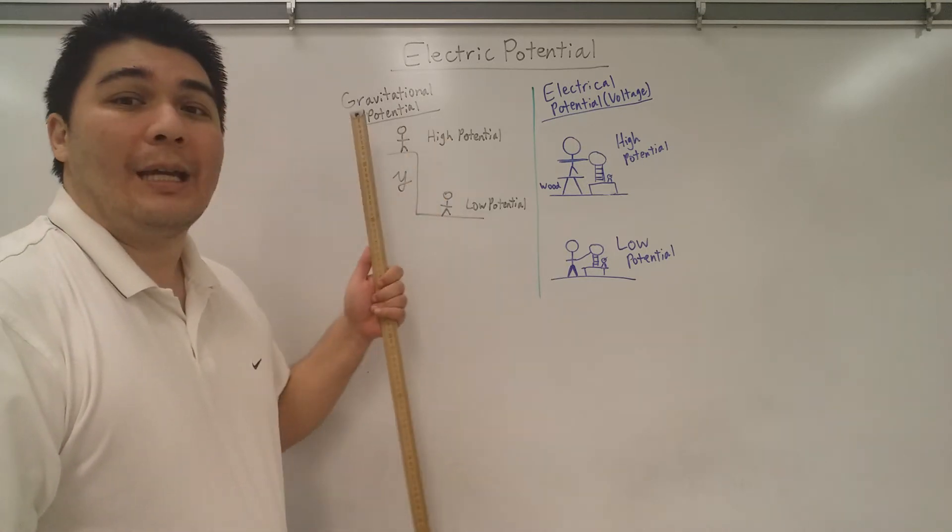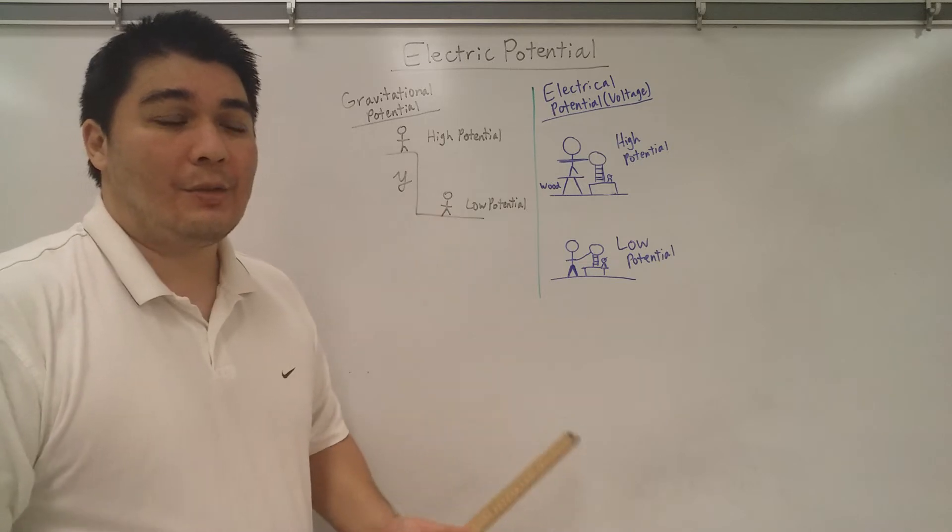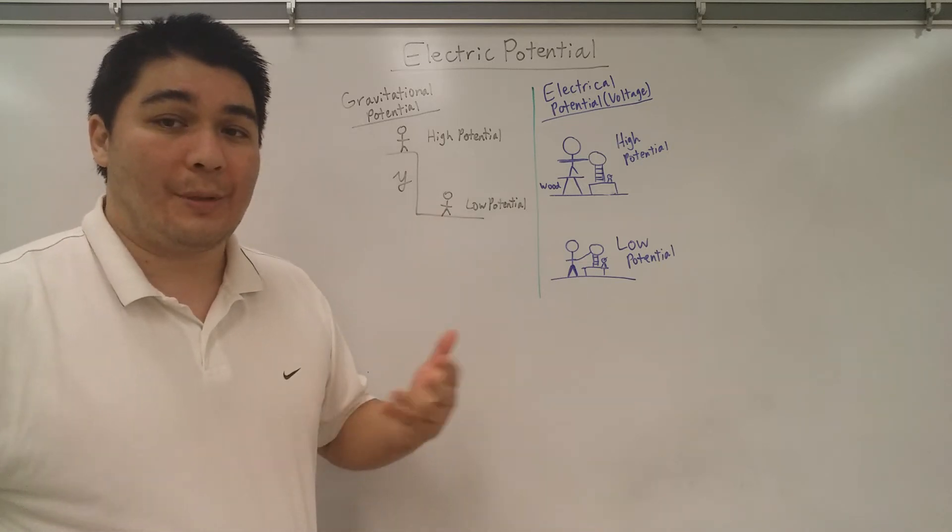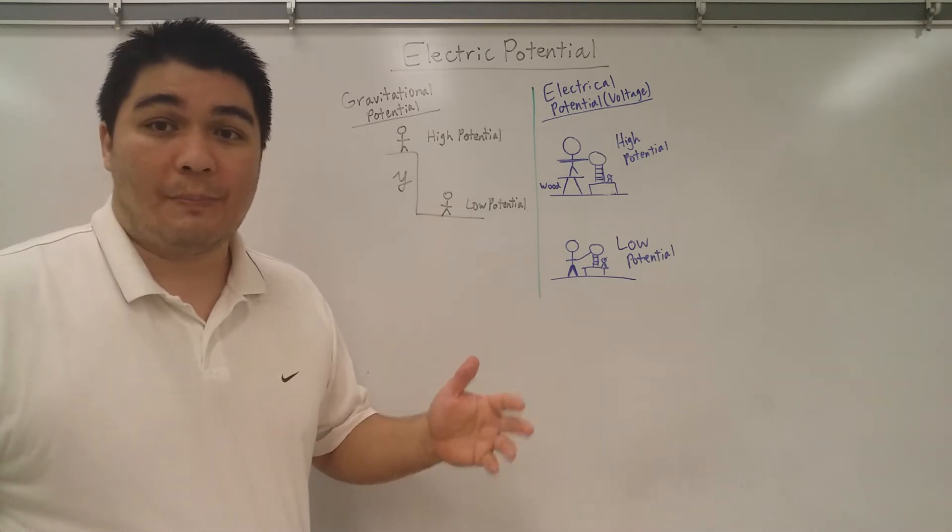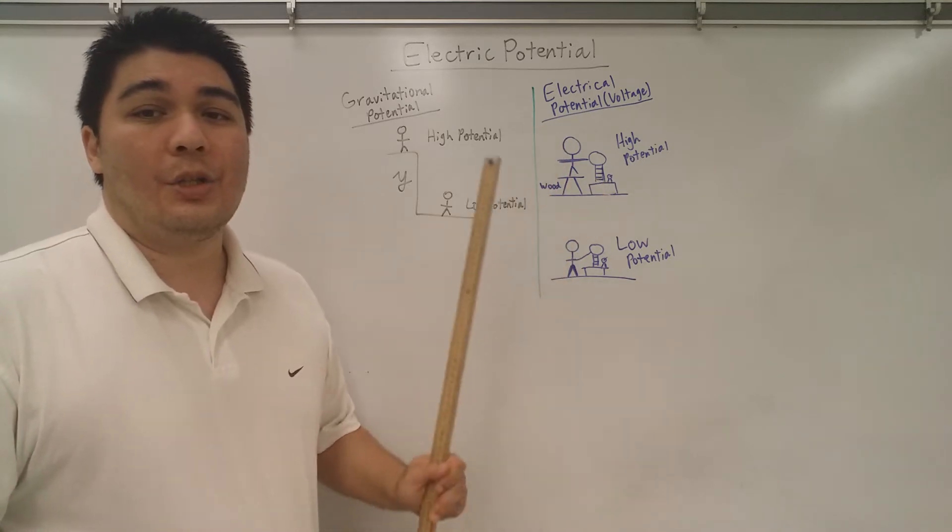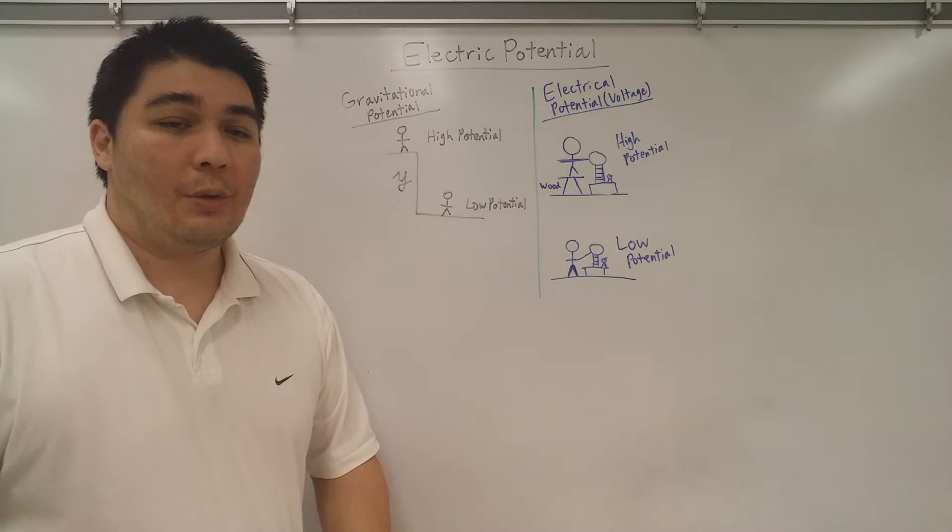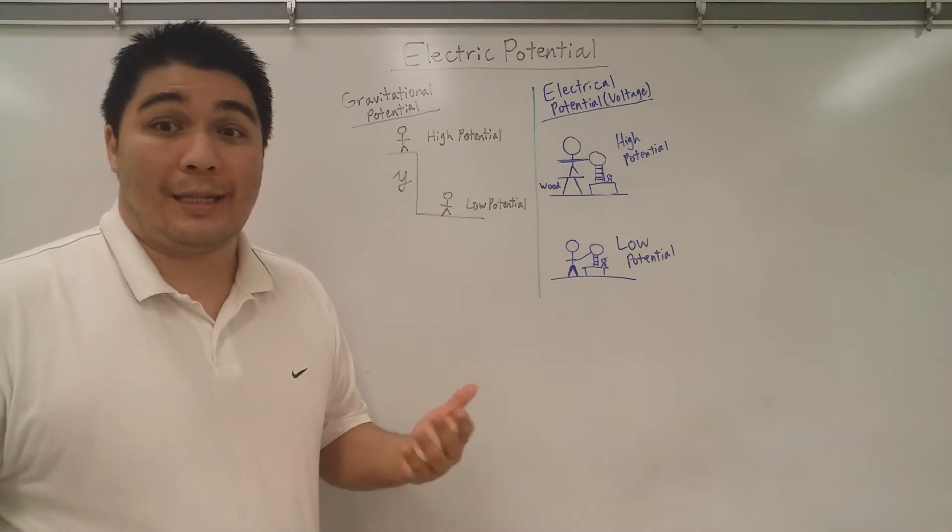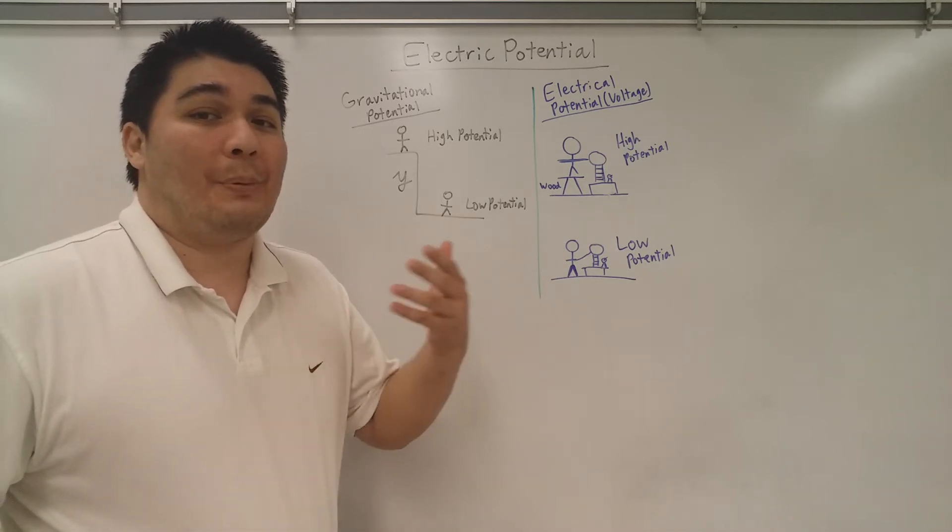Gravitational potential is energy, because you will find that the unit for gravitational potential is joules. However, with electric potential, you find that the unit is joules per coulomb. So what it really is, is really what they say. It's electric potential.